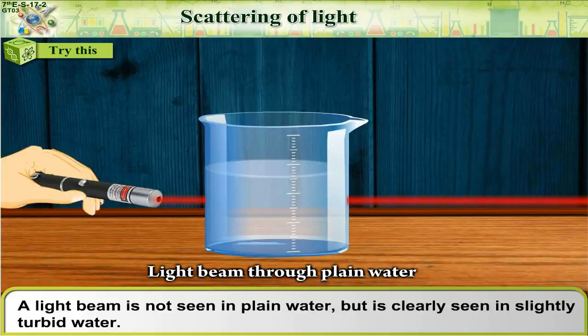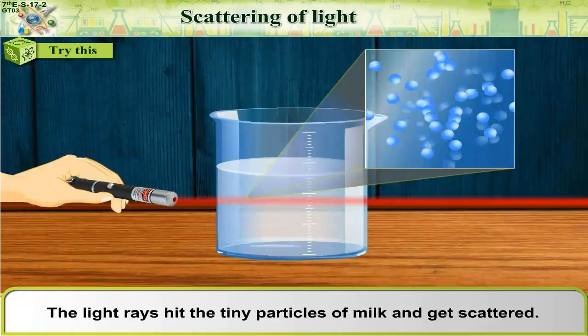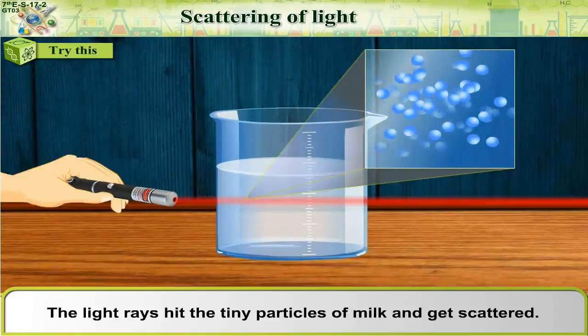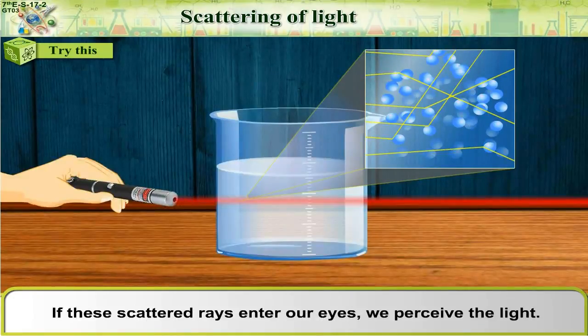A light beam is not seen in plain water but is clearly seen in slightly turbid water. The light rays hit the tiny particles of milk and get scattered. If these scattered rays enter our eyes, we perceive the light.